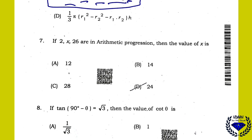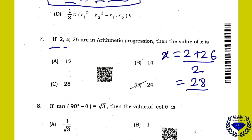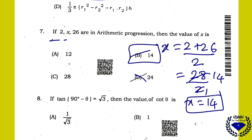Question 7: If 2, X, and 26 are in AP, then X is the average of the two numbers. That is (2 + 26)/2 = 28/2 = 14. So the right answer is 14.